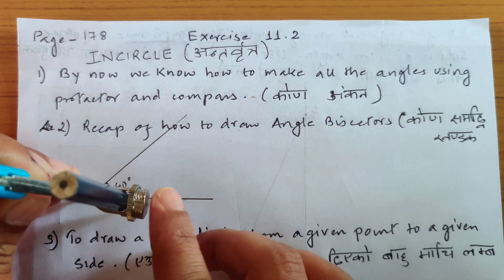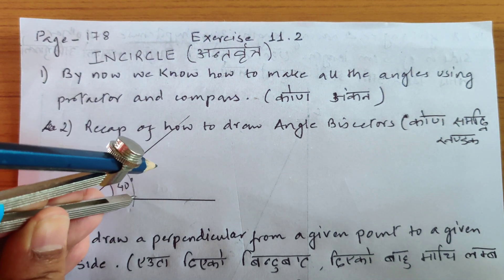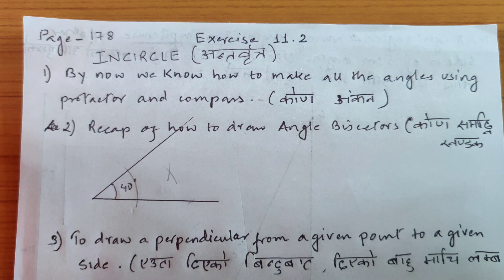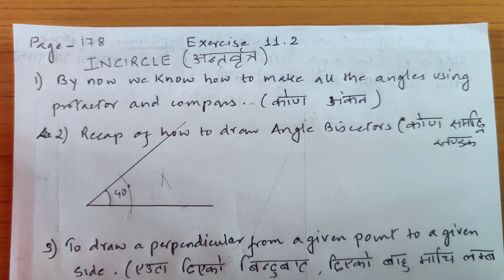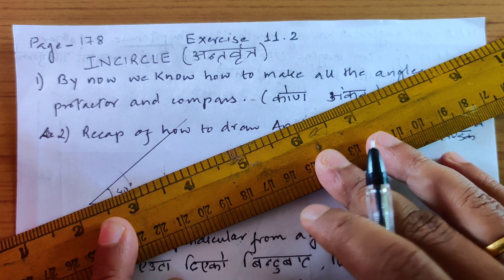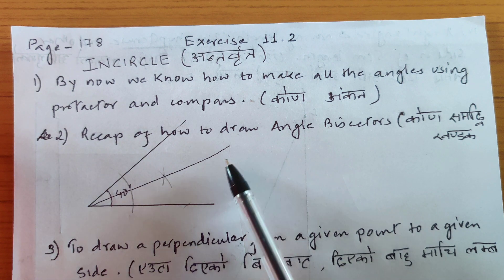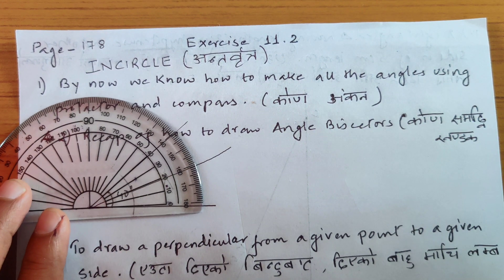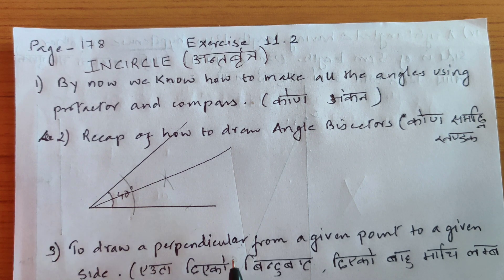Let me show you a recap with an angle of 40 degrees — I'll teach you how to bisect this angle. Take any measurement. If I bisect 40 degrees, how much do we expect? 20 degrees. Yes, it's roughly 20 degrees. So we all know how to draw angle bisectors.